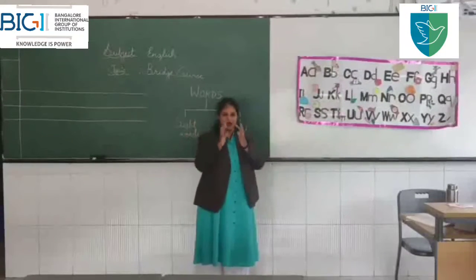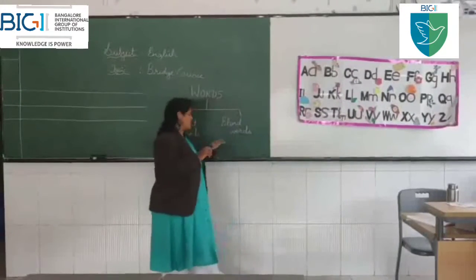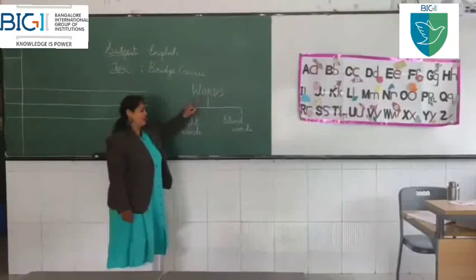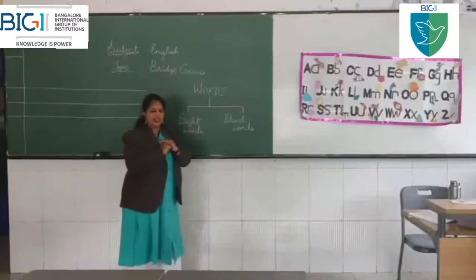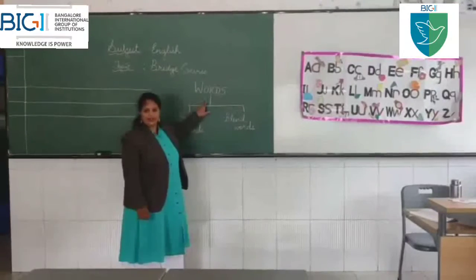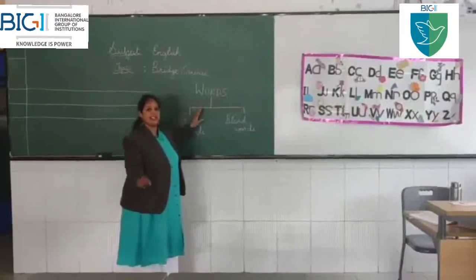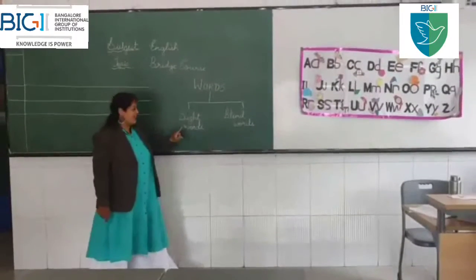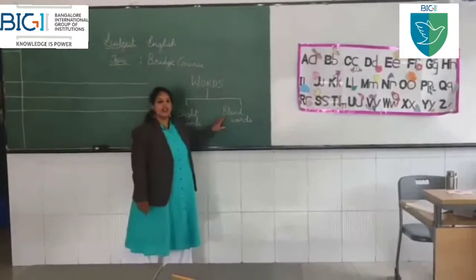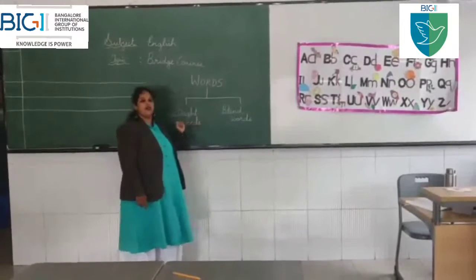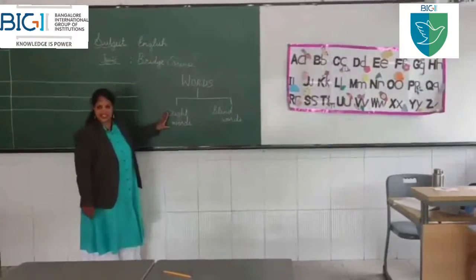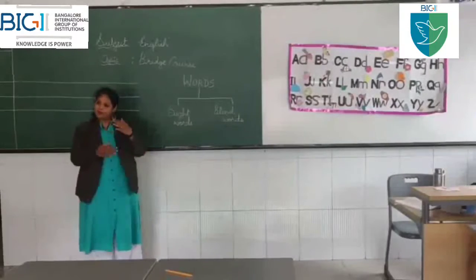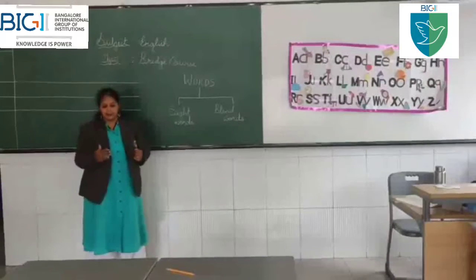A group of letters together is called a word. Words are basically of two types: sight words and blend words. First, we shall learn about sight words. Sight words are words that keep repeating themselves in every sentence.